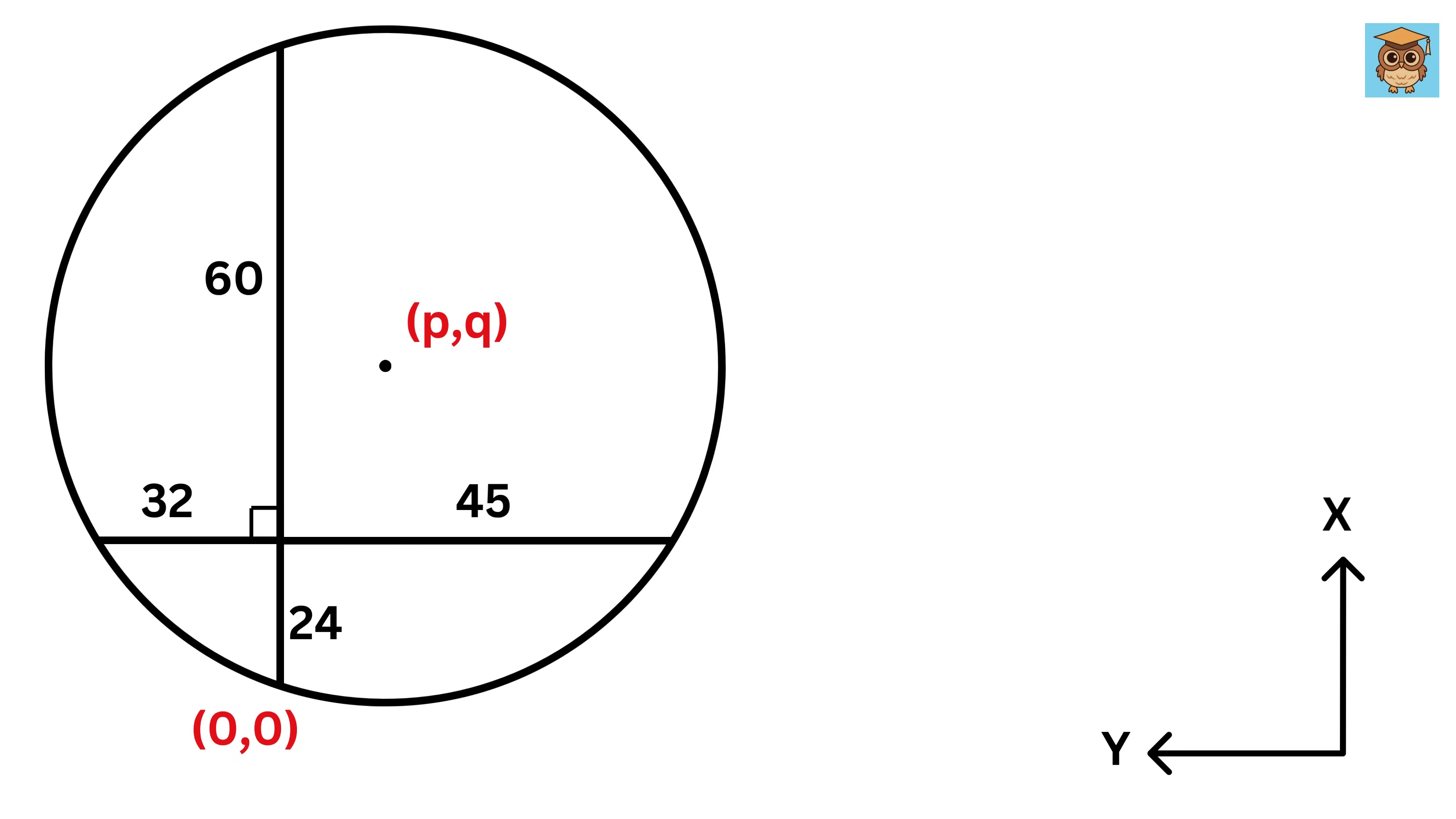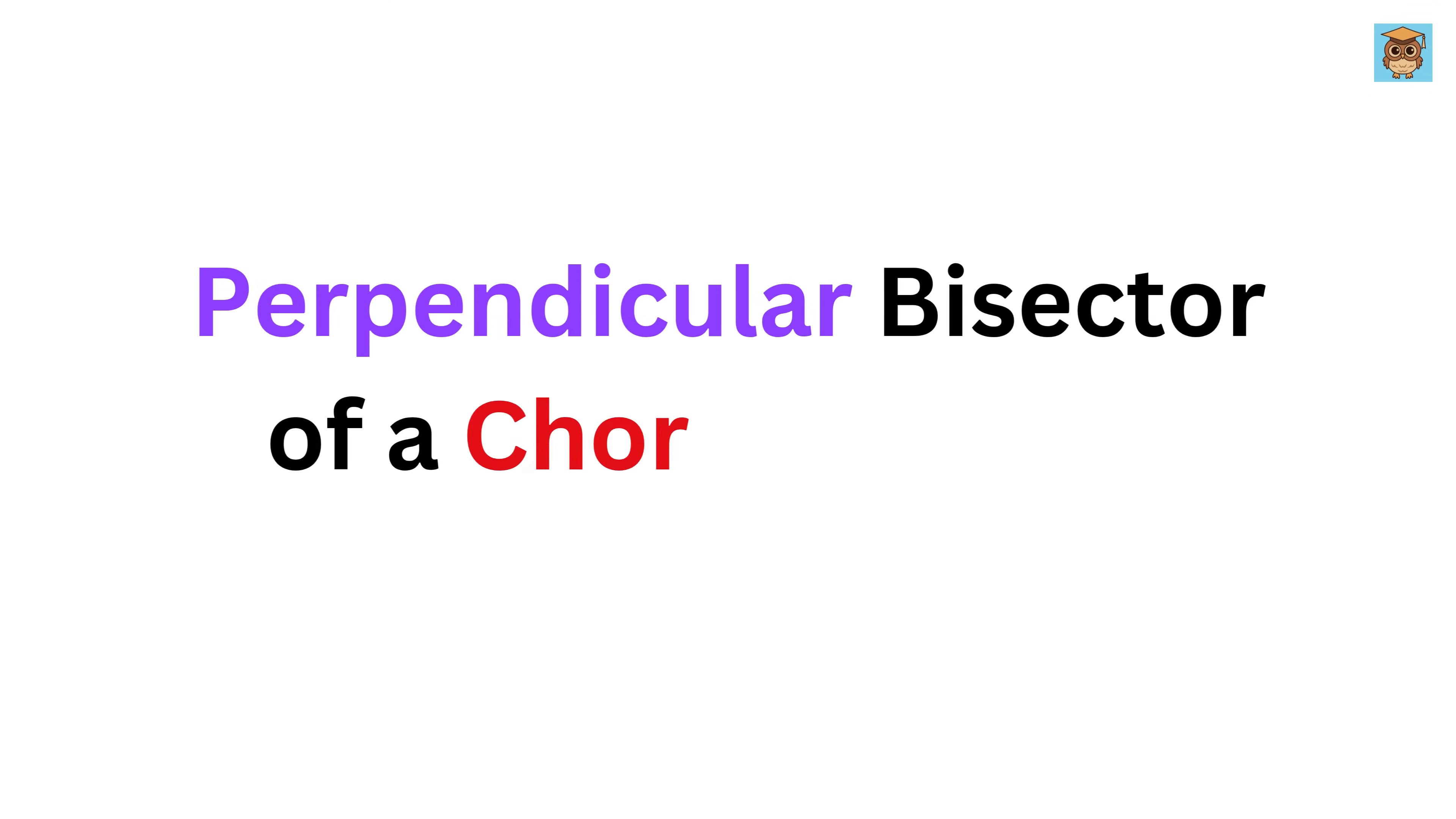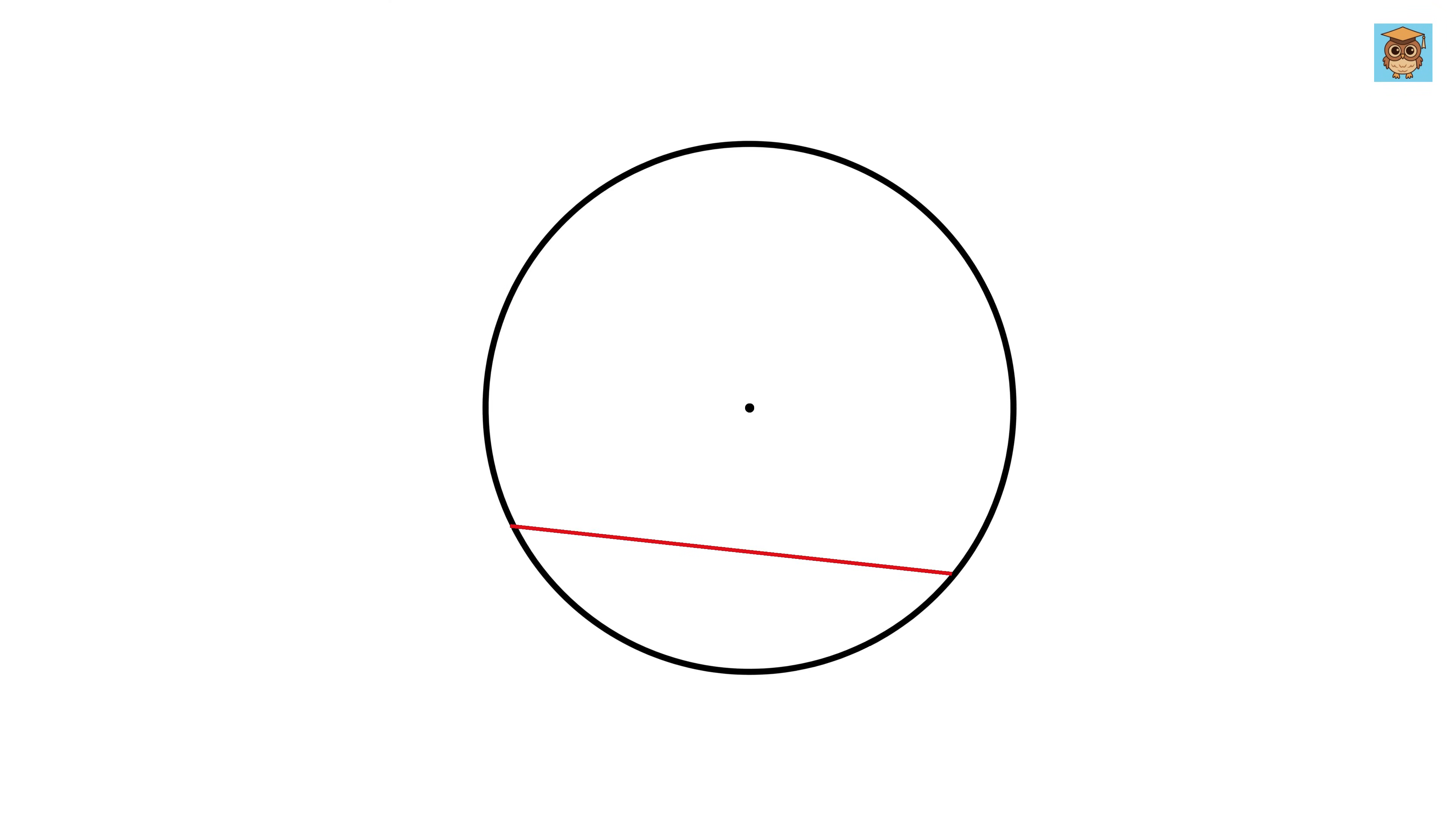Now let me tell you about a theorem called the perpendicular bisector of a chord theorem. This means that if we draw a line that is both perpendicular to a chord and divides it into two equal parts, then that line must pass through the center of the circle.